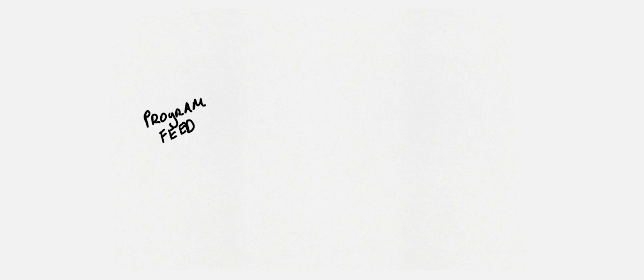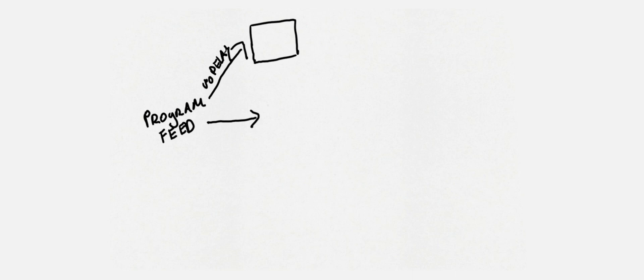So we have the program feed that's made in production, and that they're going to send to a monitor with audio. Then we're going to send that same program to a machine that has OBS running on it — it can be either NDI, a Decklink, basically anything to get the feed in. Within OBS we're going to do a 4 to 5 second delay.